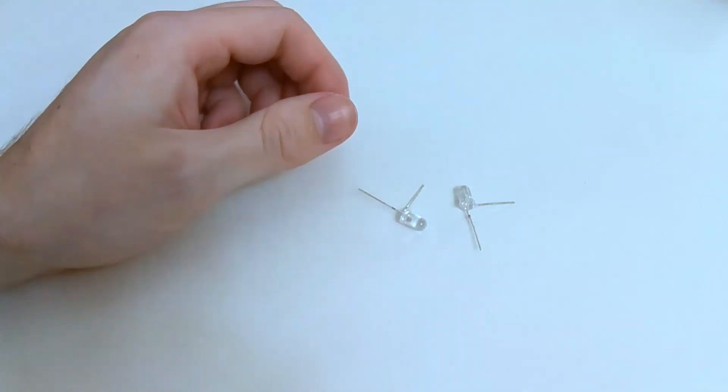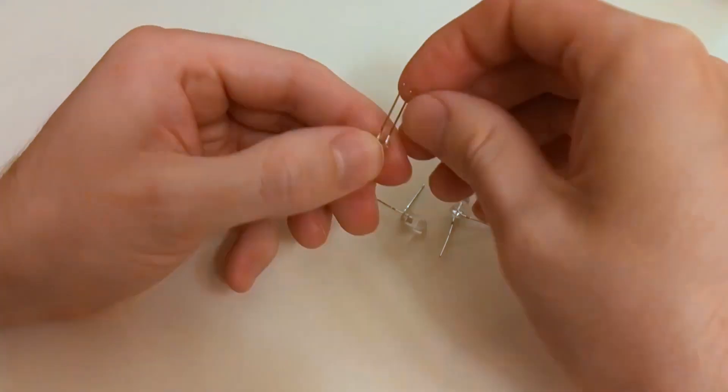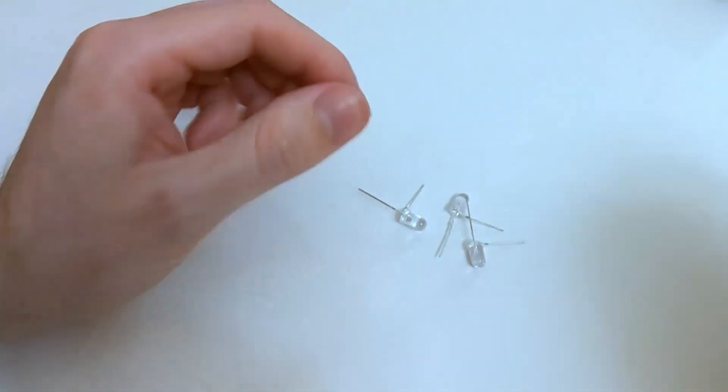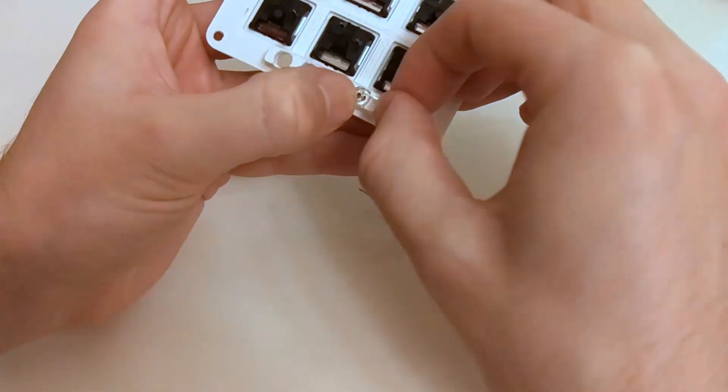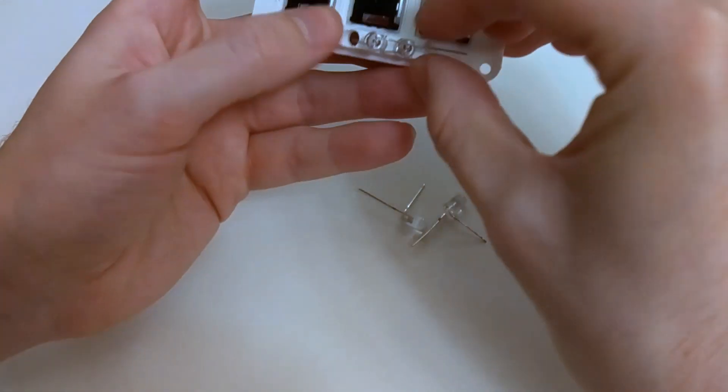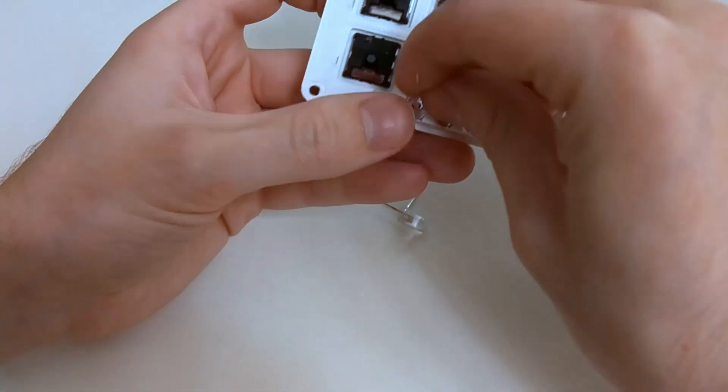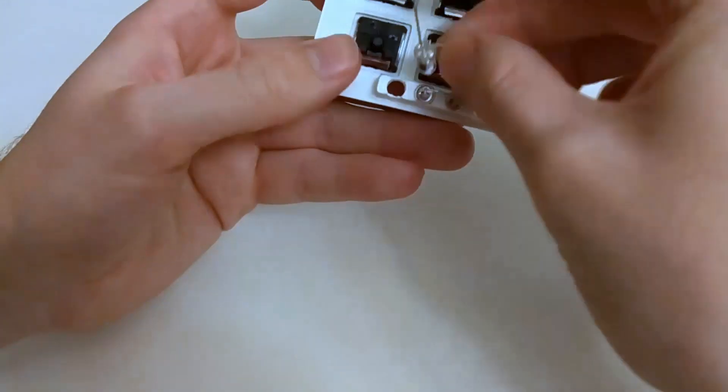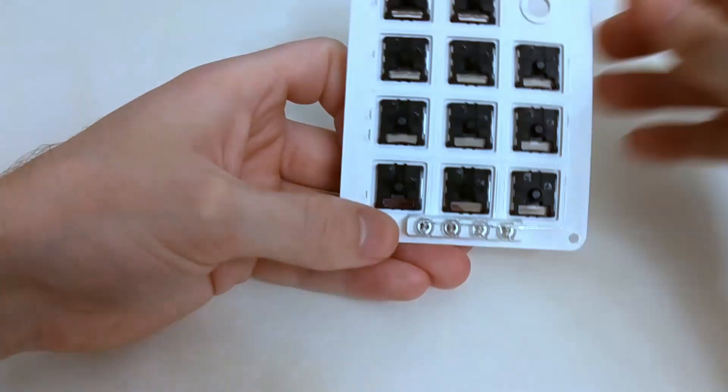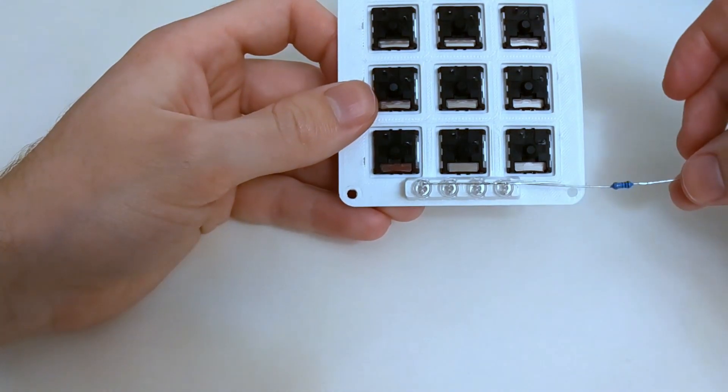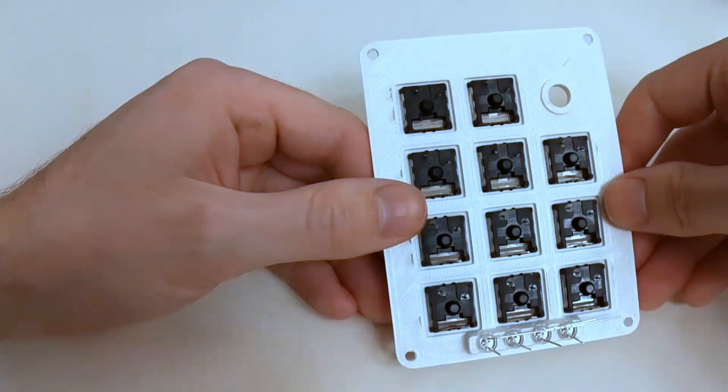For the LEDs, I'm just taking the ground lead and bending it down at 90 degrees, and then putting those in place. I'm making sure that all of the leads face in the same direction because we can just solder those leads together and then just put the resistor in line between all of those ground leads and the ground pin on the Pro Micro, so we only need one resistor in here.